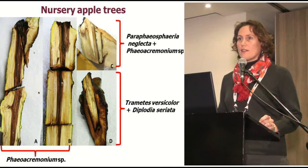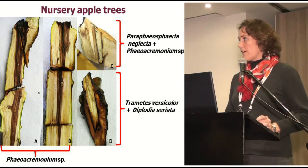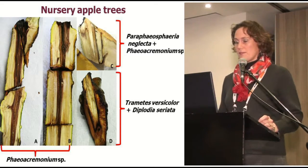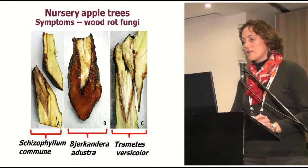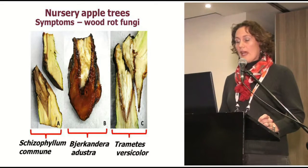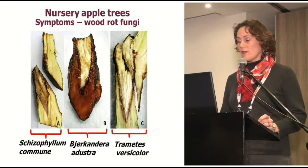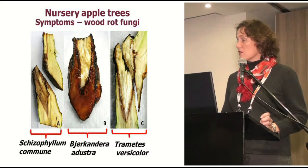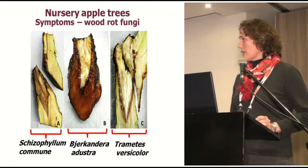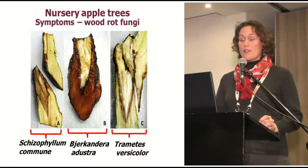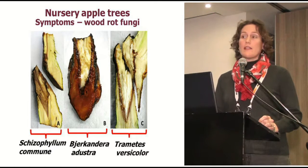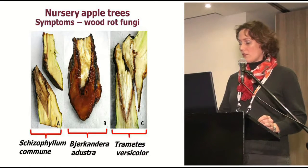Photo D illustrates that from that pruning wound on the rootstock, a wood rot fungus has already infected and caused some wood rot. All three of those pathogens are wood rot pathogens causing white rot within that specific area on the nursery tree. This was quite alarming, because wood rot is something we usually associate with older orchards — not with a tree that is about three years old being sold to farmers.